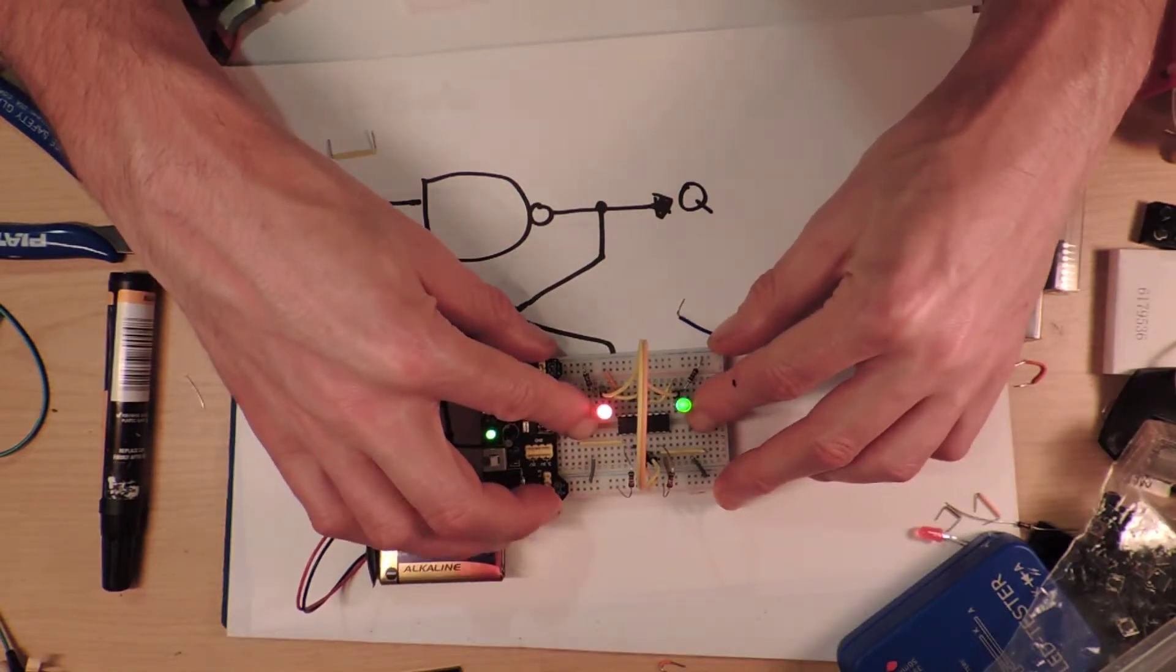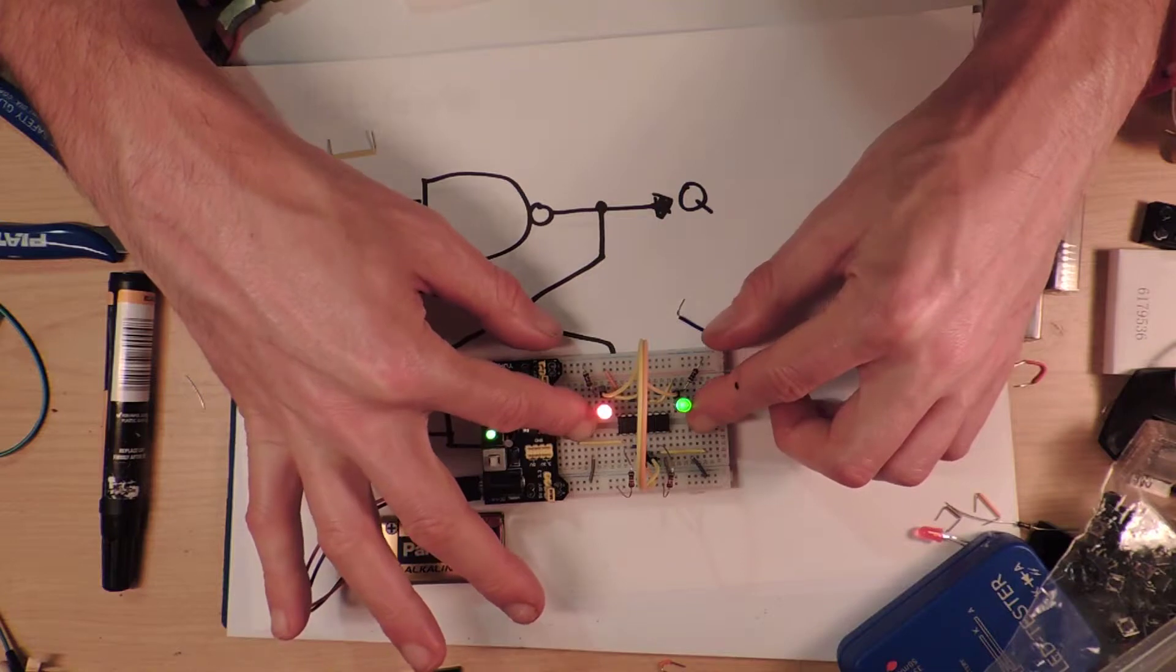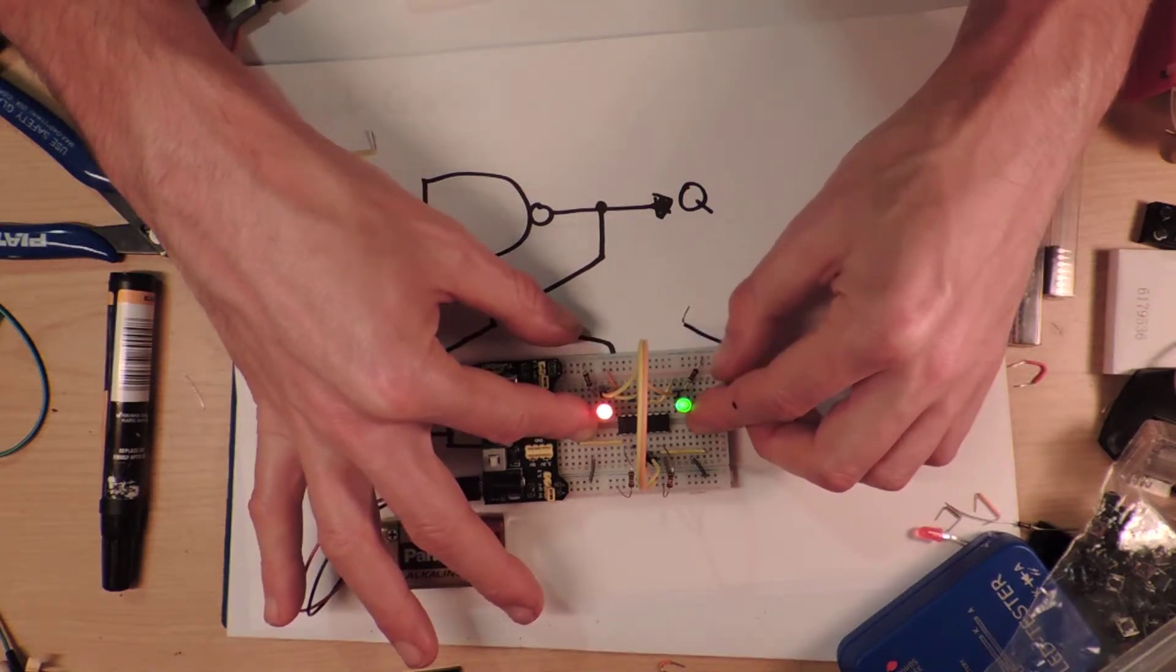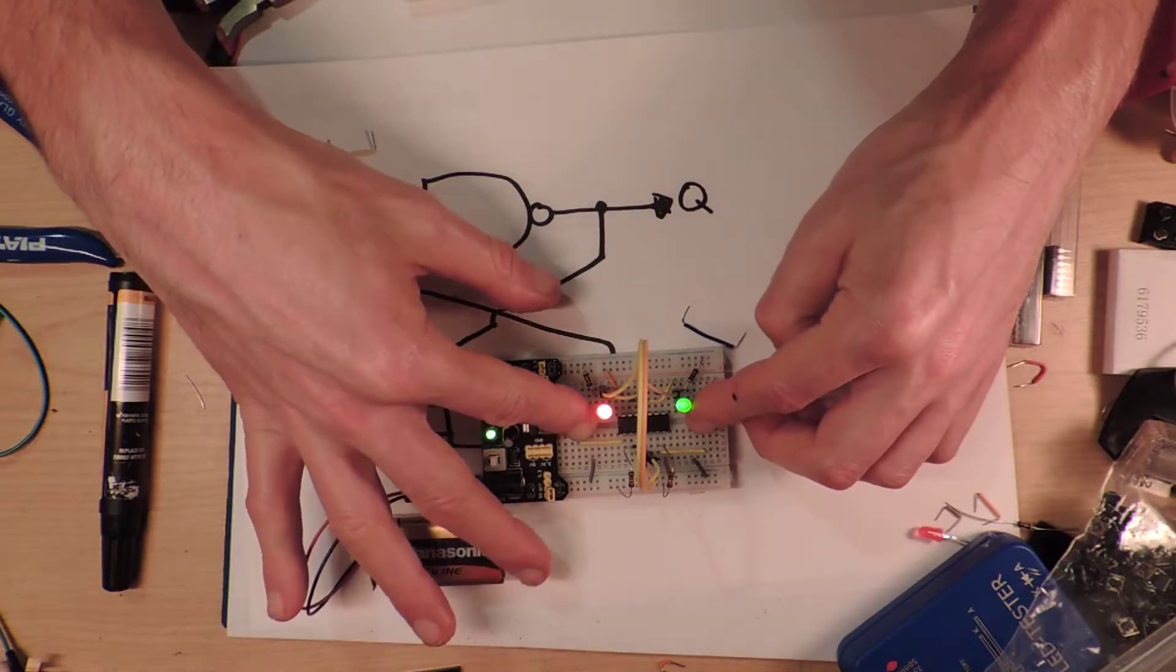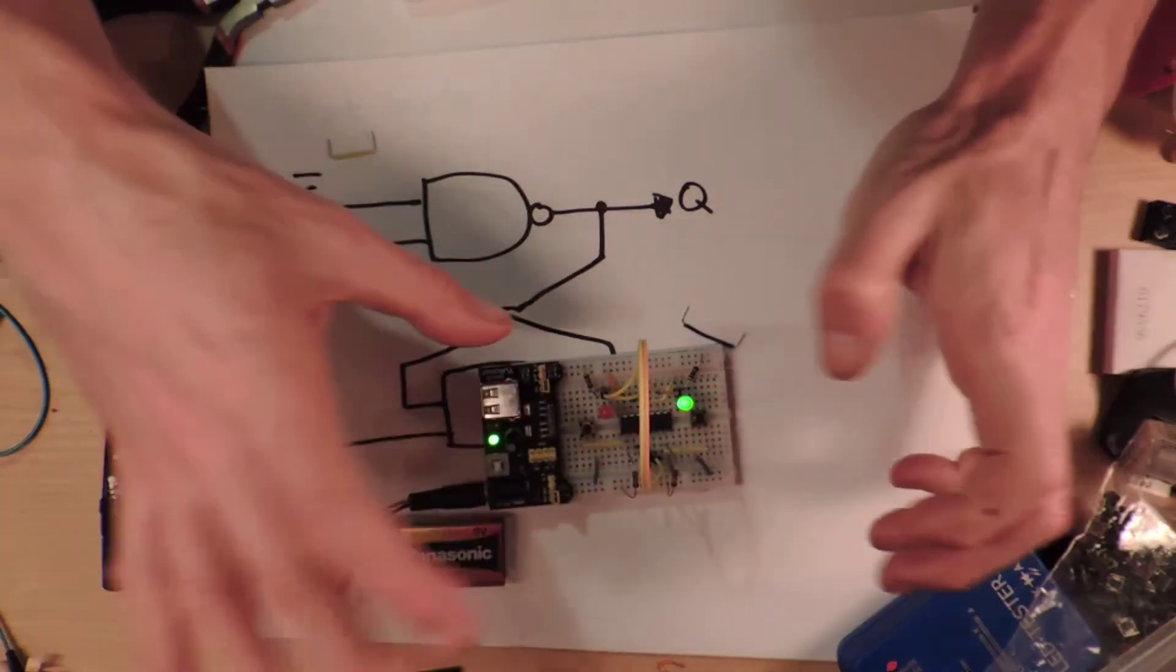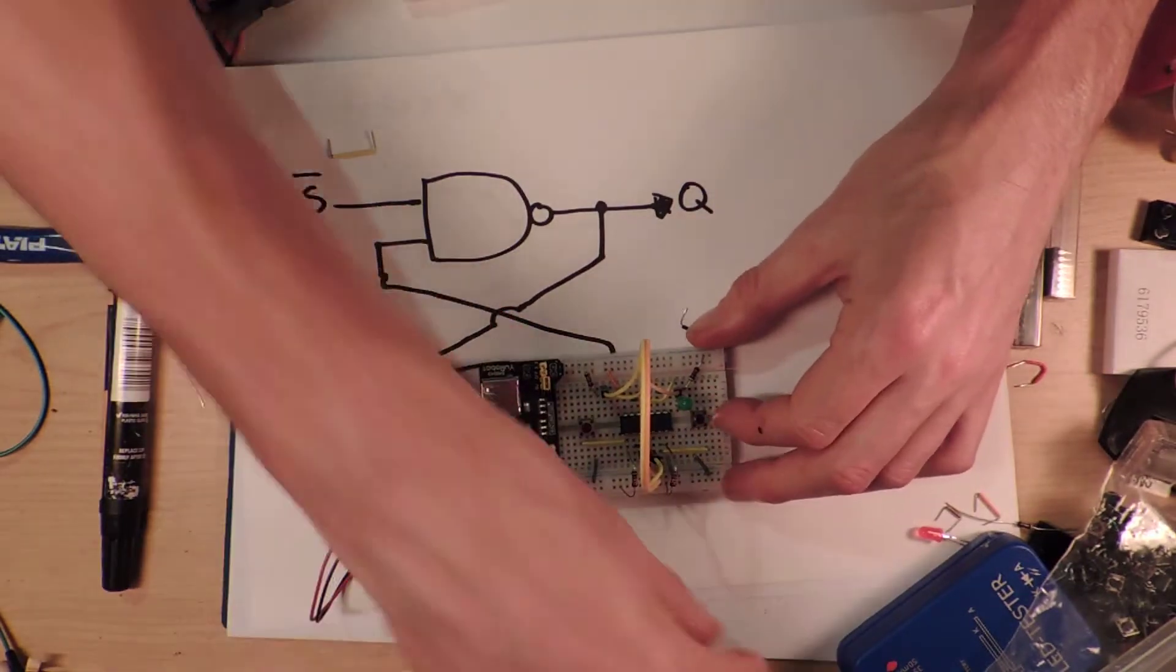So you'll see that if I hold them both, the buttons down, and I pull them both high, both the LEDs come on. And I don't think it's flickering between two states. It's actually stuck at the one state. But if I let go, it's kind of like a really cheap way of doing...